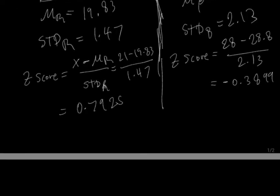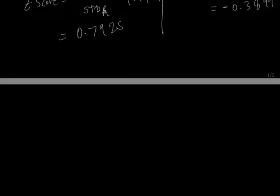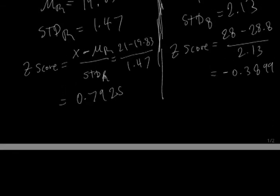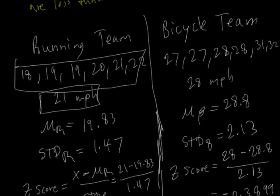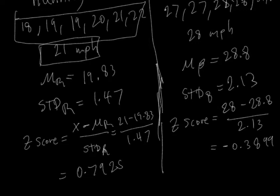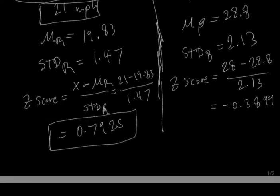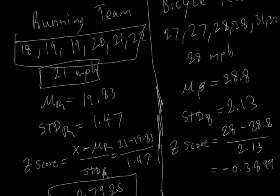Now, if we think back to our distribution that we drew at the beginning, on the running team, your cousin's z-score is close to 1, about 0.8. Whereas on the bicycle team, your cousin's z-score is minus 0.38.